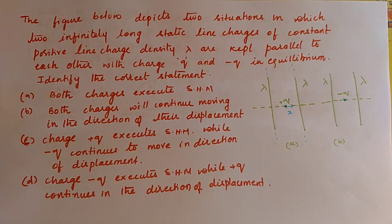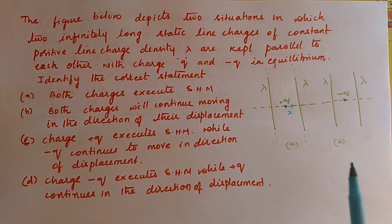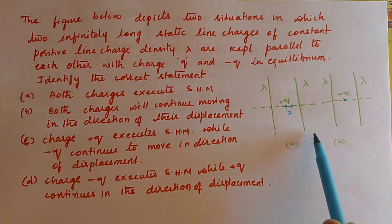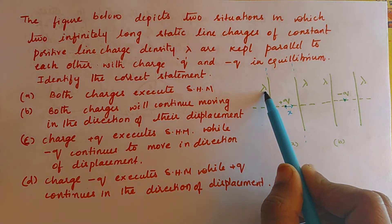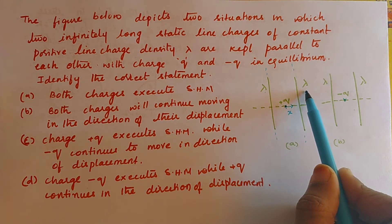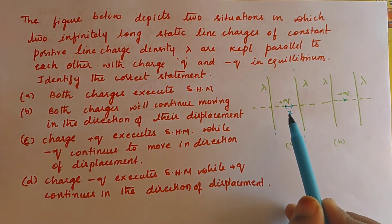This simplifies to 4 sigma by 2 epsilon naught, or 2 sigma by epsilon naught in the minus k-cap direction. Now look at the next question, which was a previous IIT question.